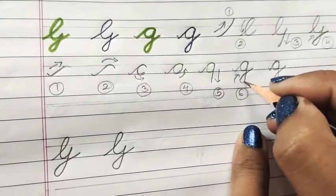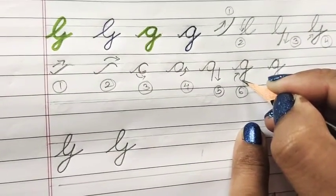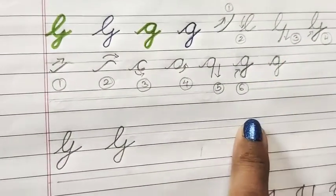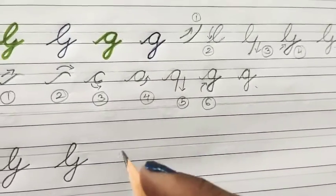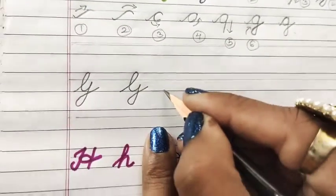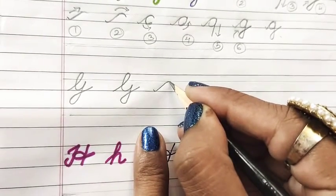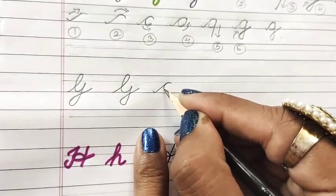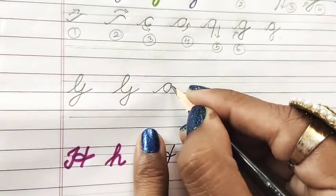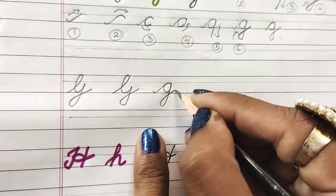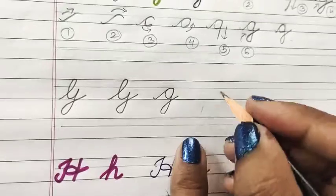Once you drag it down, downstroke is given, create a loop, and your G is done. So I'll show you, see: small tick mark like structure, curve, join it, drag it down, and another loop, and your G is done.